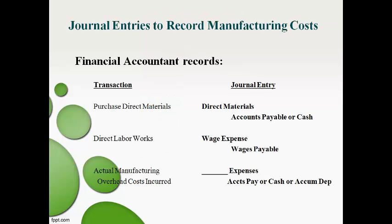The financial accountant records the initial transactions. Direct materials purchased are recorded to the direct materials inventory account. Direct labor works and is recorded as an expense. Manufacturing overhead costs incurred are also recorded as an expense. All product costs must be recorded to the inventory account and not expensed. It is the managerial or cost accountant's responsibility to move these product costs out of the expense account and into work in process.